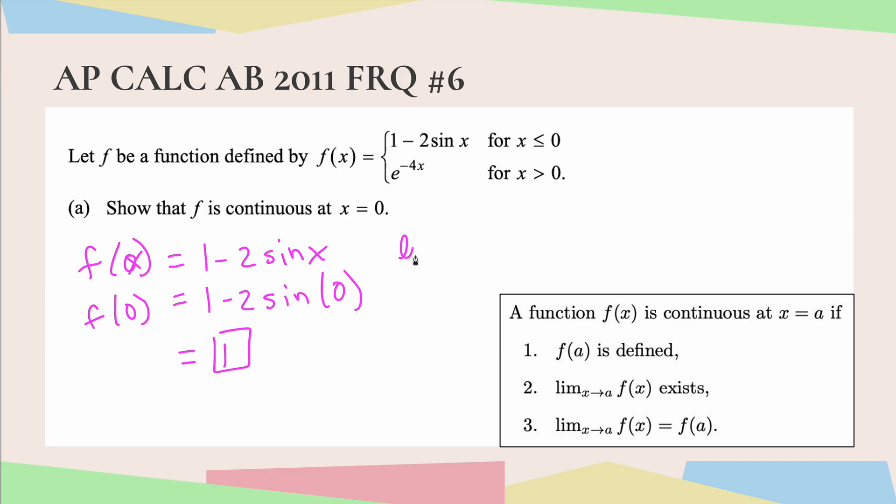Now we're going to take the limit from the right, and then we're going to take the limit from the left. So the limit from the right, we're going to be using this function rule, e to the negative 4x. We are going to use direct substitution. So e to the negative 4 times 0 is just 0, and any number to the 0 power is 1. So we've confirmed that the limit from the right is also equal to 1.